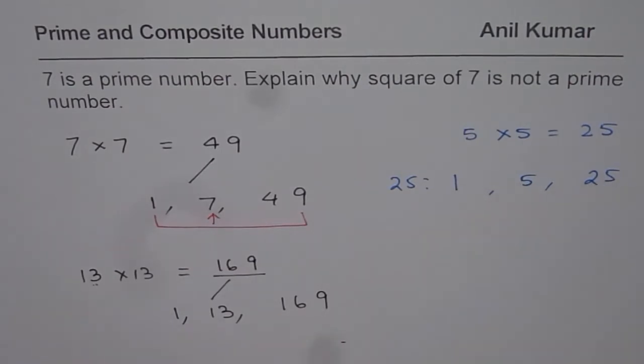There are 3 factors. If we have more than 2 factors, then it is a composite number, not a prime number. Therefore, the square of any prime number will never be prime. It will always be a composite number.